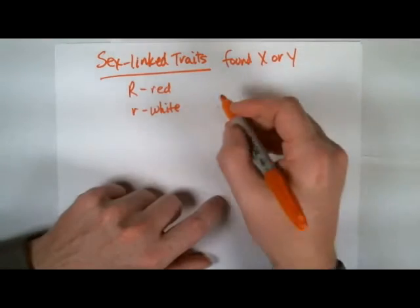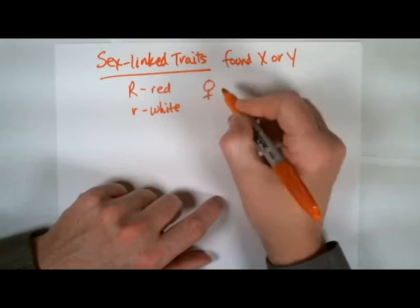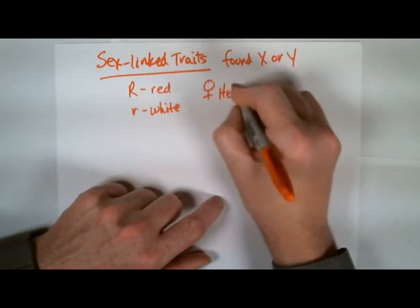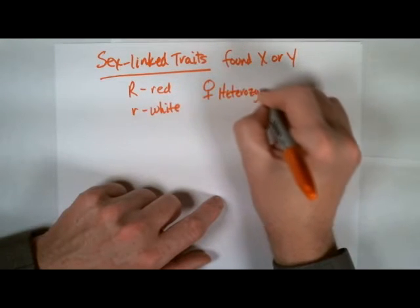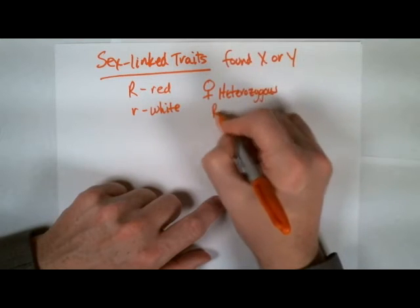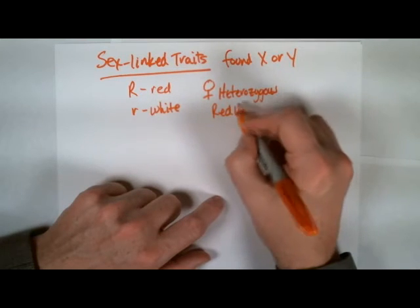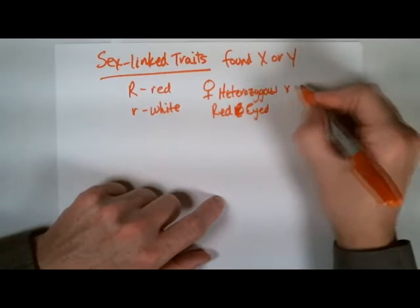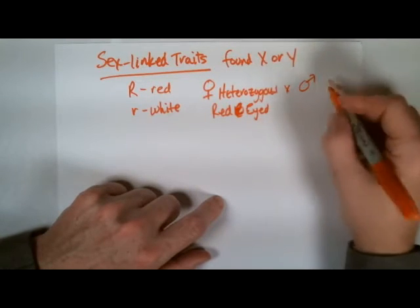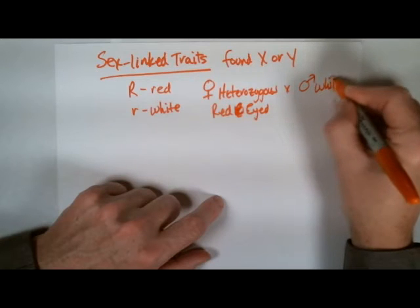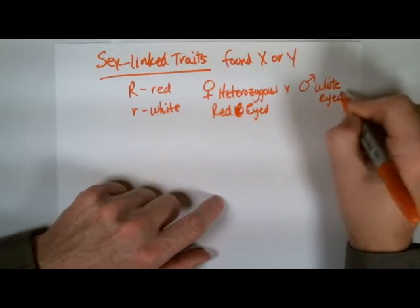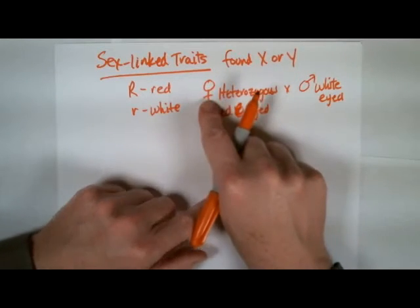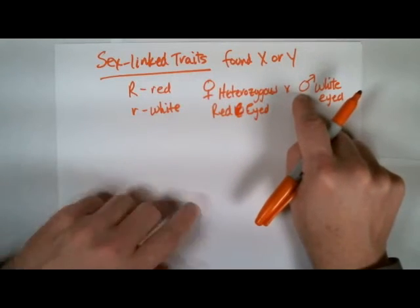Now let's work through a problem here. Let's say that I have a female fly that's heterozygous, red-eyed, and it mates with a male that is white-eyed. So it's a white-eyed male. Remember that this is a symbol for female, that's a symbol we use for male.